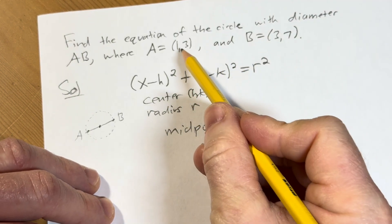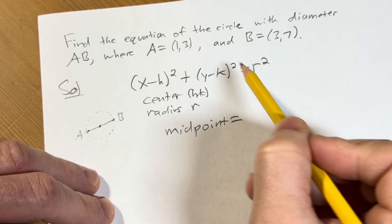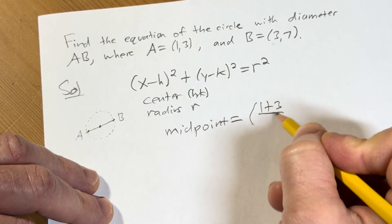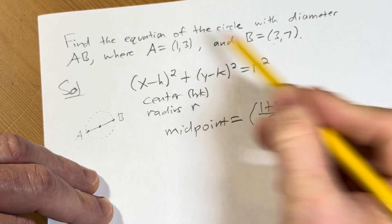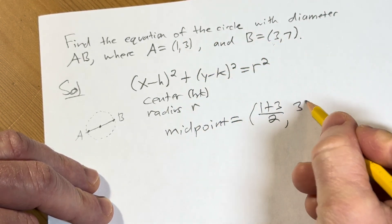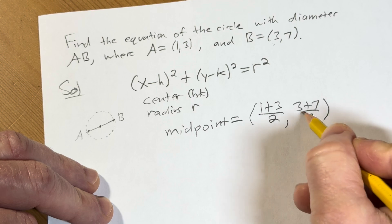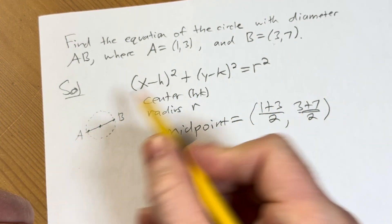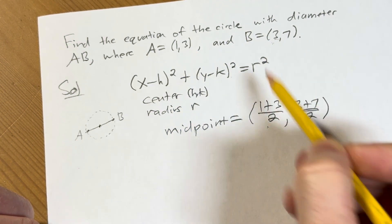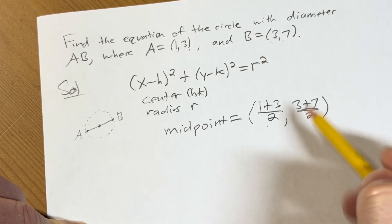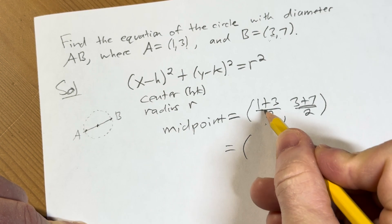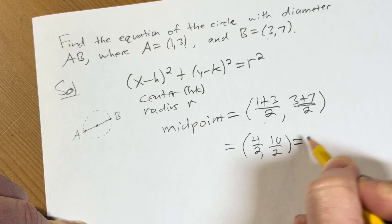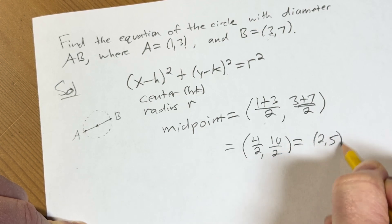And to find it, what you do is you add the x coordinates and divide by 2. So 1 plus 3 divided by 2. And then you add the y coordinates and divide by 2. So 3 plus 7, and you divide by 2. That's how you find the midpoint. So it's the point right in the middle. So you add the x's, divide by 2. Add the y's, divide by 2. So this is equal to 4 over 2, 10 over 2.